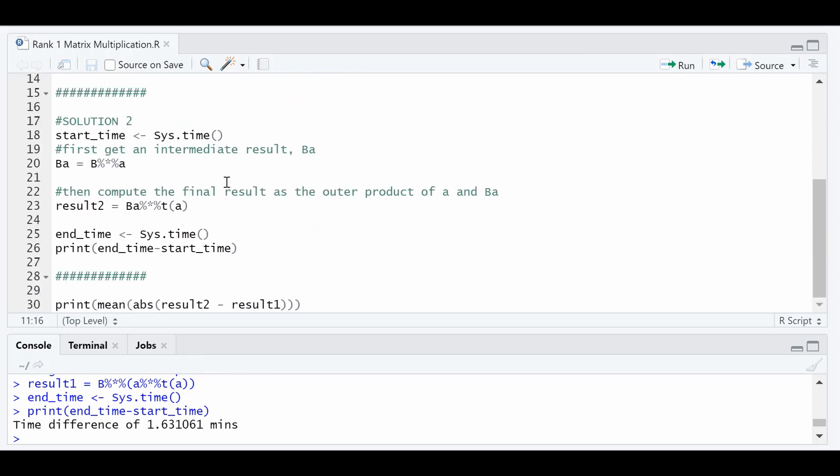Here's the second solution taking advantage of the rank 1 nature of this problem. We get the intermediate result BA, which is just the 5,000 by 5,000 matrix B times the 5,000 by 1 vector A. So this is obviously easier to do than a 5,000 by 5,000 times 5,000 by 5,000 matrix multiplication. Then, since we know that in the result, each column is just some multiple of this BA, like we saw on the whiteboard, we can go ahead and just say that the final result that we want is BA and then this matrix multiplication of transpose of A. I know we didn't show this on the whiteboard explicitly, but you can go ahead and show yourself that if you do this operation, this is an outer product again because it's a 5,000 by 1 vector multiplied by 1 by 5,000 vector. This outer product does exactly the same thing as filling each element of the result, each column of the result by this vector BA times A1 then times A2 then times A3. So it does the exact same thing.